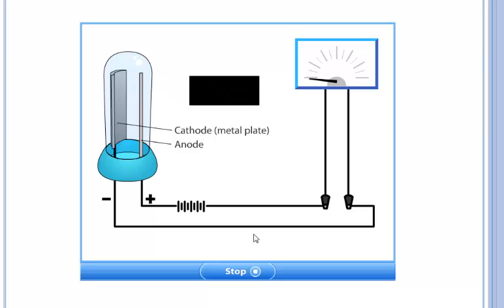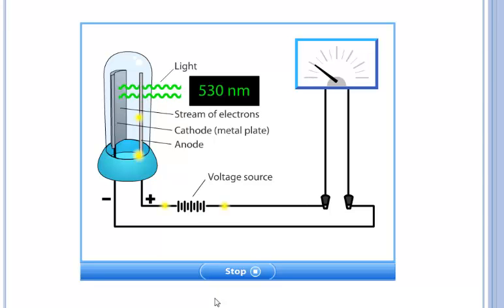Each metal has a characteristic energy level. If the incoming light is below this level, no electrons will be ejected. For example, red light is not sufficiently energetic to eject electrons from cesium metal. Yellow light is also not energetic enough. Green light is energetic enough to eject electrons and current flows.